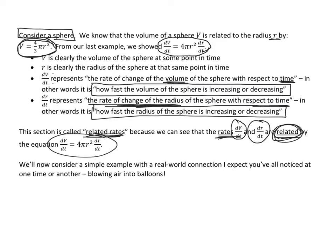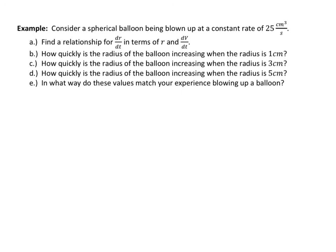The next example should connect with you on a very specific level. Assuming you have a round balloon — not a clown balloon you bend into animals — consider a hypothetical spherical balloon being blown up at a constant rate of 25 cubic centimeters per second. Part A says: find a relationship for dr/dt — the rate of change of the radius — in terms of the radius and dV/dt.